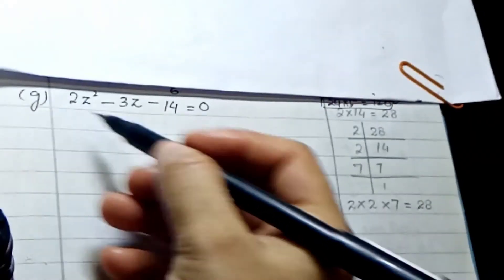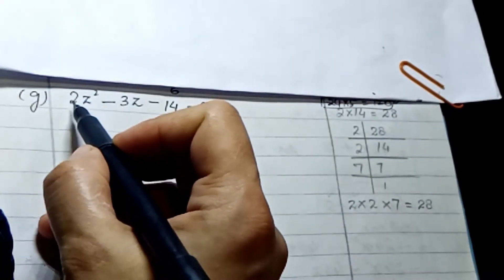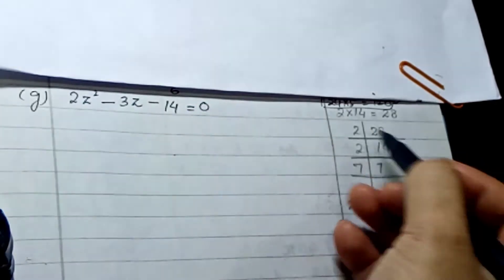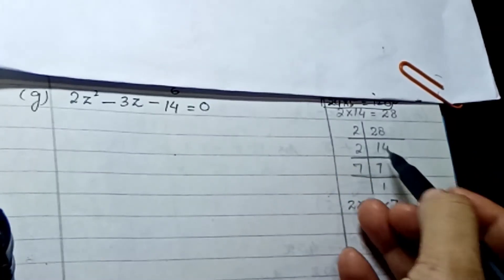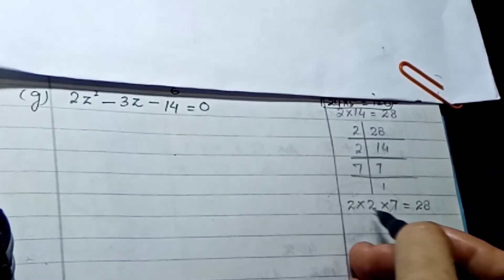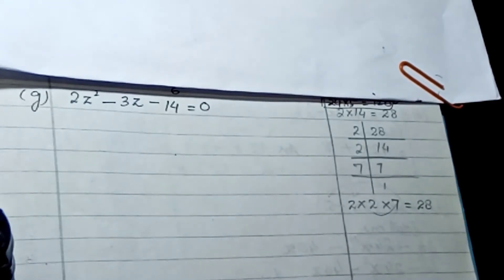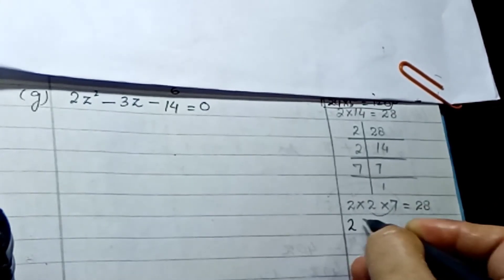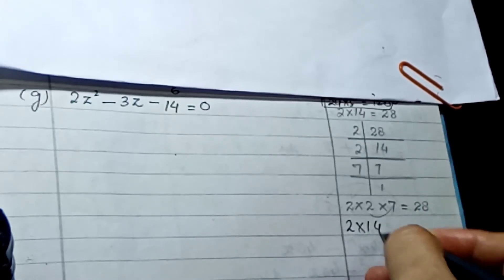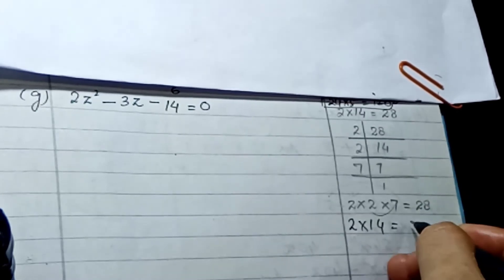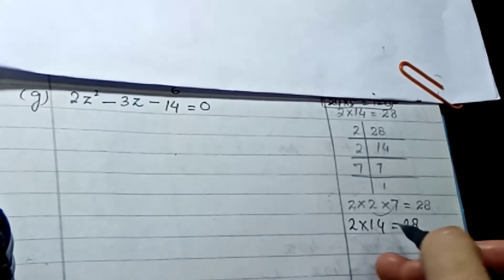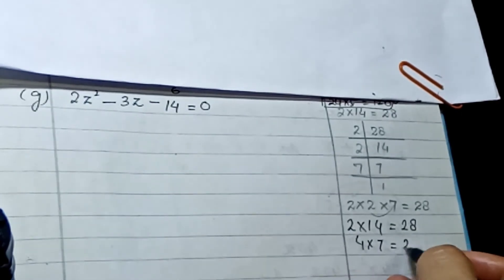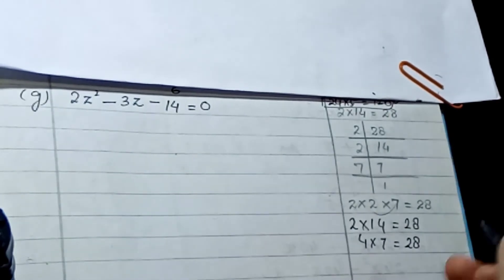Now solving part G. Here we multiply 2 by 14 to get 28. Factorizing 28 gives 2 × 2 × 7, so the possible factor pairs are 2 × 14 = 28 and 4 × 7 = 28.